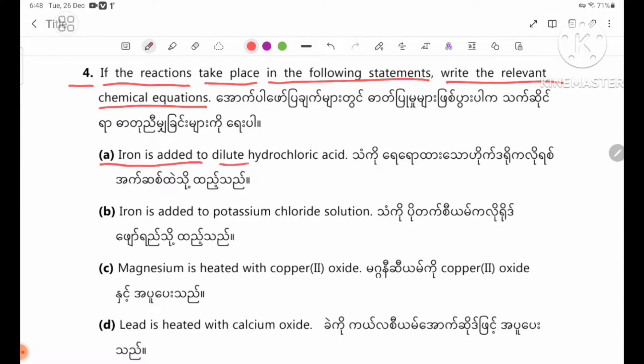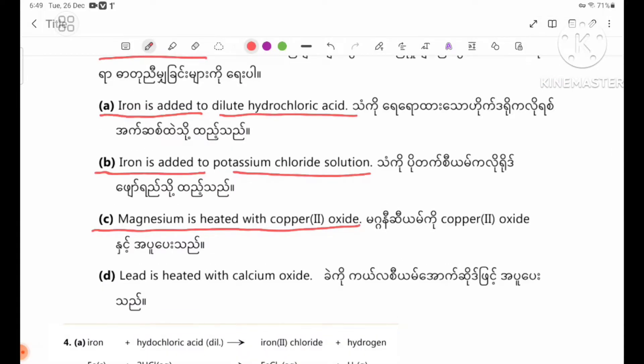Problem A: Iron is added to dilute hydrochloric acid. Problem B: Iron is added to potassium chloride solution. Problem C: Magnesium is heated with copper oxide. Problem D: Lead is heated with calcium oxide. Let's get the equations for these reactions.